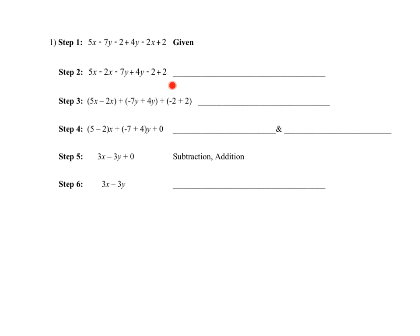The property we just did there is the commutative property, because that was changing order — the commutative property of addition because we just move terms around. The next one, looking from step two to step three, I kept everything in the same order but I'm grouping things together. What property says grouping? That's the associative property, and in this case it's the associative property of addition.